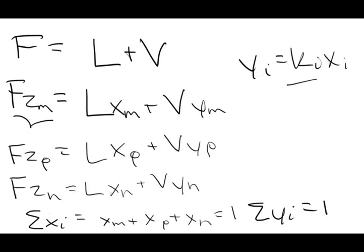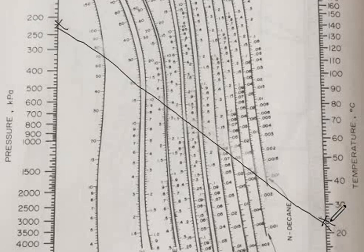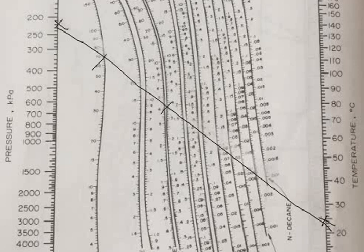This is the DePriester chart, figure 2-11 in your book. The system is at 25 degrees Celsius and 202.65 kilopascals. We draw a line connecting these two points, which gives us K values for each species — each line represents a different species. Where our line intersects the methane line, we get K_M of approximately 70. For propane, K_P is about 4.2. For N-hexane, K_H is about 0.12. Your numbers may be slightly different depending on how you read the chart, but should be relatively similar.